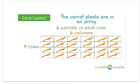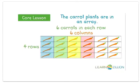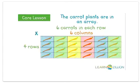That means there are six columns. In an array, the columns go down. This array is four rows by six columns. Four groups of six carrots.